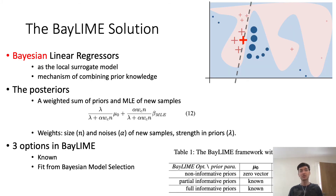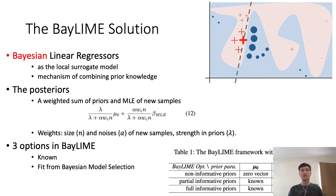Our solution is actually very simple and effective. We use a Bayesian linear regressor as our local surrogate model, so that we can combine some useful prior knowledge for those three desirable properties. It turns out the posterior estimates of the importance of each feature can be written as a weighted sum of the prior knowledge and maximum likelihood estimates based on the new perturbed samples. The weights depend on the size and noise in the new perturbed samples and also the belief strength in the prior knowledge.